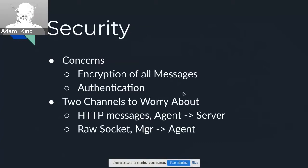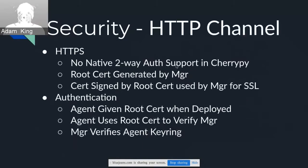We have two channels to worry about. For the HTTP messages — things going from the agent to the server when we send metadata up via POST request — we need to make sure that's secure. And then the raw socket: the agent has the raw socket and the manager needs to be able to send information to it securely. We need to make sure that when we're sending something to the agent, it's actually the agent. The agent needs to make sure what it gets from the manager is actually coming from the manager. You can't just have anyone sending things to it. First, we need to set up HTTPS for encryption. Unfortunately, it doesn't seem like there's any native two-way authentication in CherryPy for SSL, so we can't do that — that would be the ideal way but we can't quite do it.